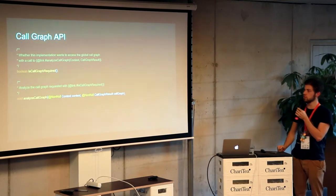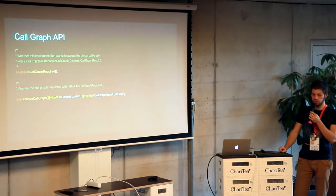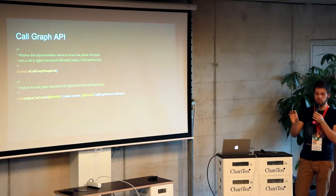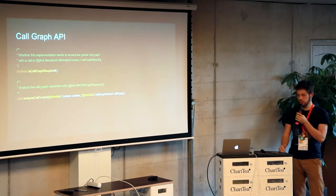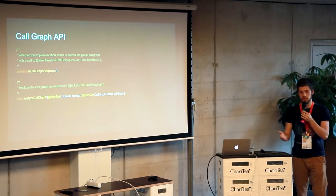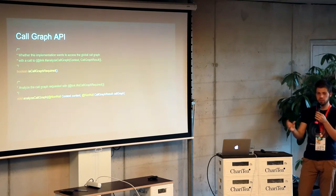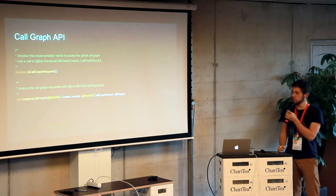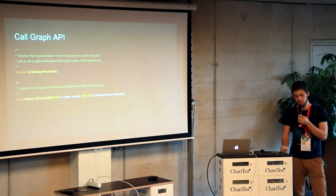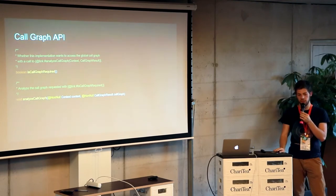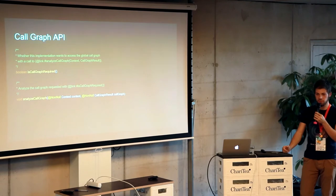Another cool thing they are working on is a call graph API. It's for doing complex analysis of code being used from multiple files. For instance there's a check return value check, and there's already a check for that, but it's not very performant. They're switching to using the call graph API so they can see where a method is actually being called. It's still super experimental. With that they can also add cool checks for things like if threads are accessing the same field with a synchronization issue - they can use the call graph API to detect things you might not be aware of.